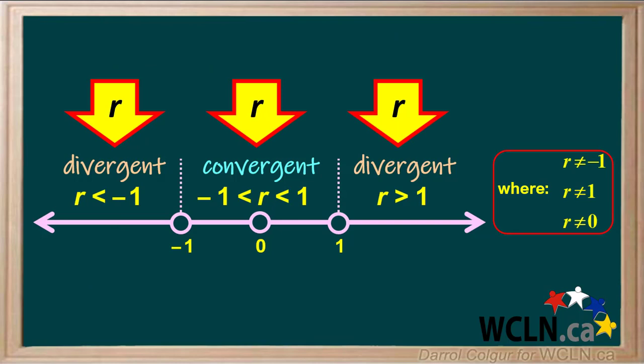So in summary, when given terms in a geometric series, determine the value of R and see which range it fits into on this diagram. This way you can determine whether the series is divergent or convergent.